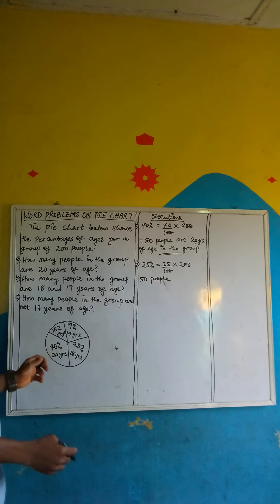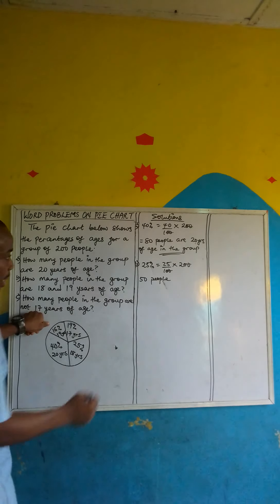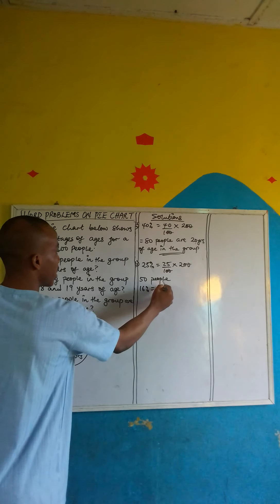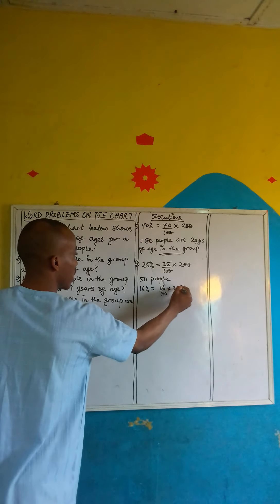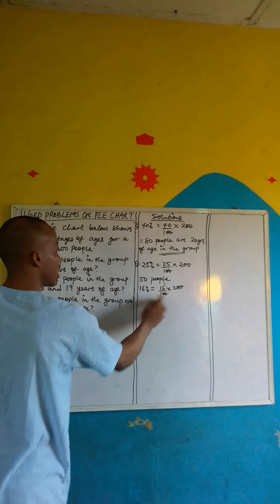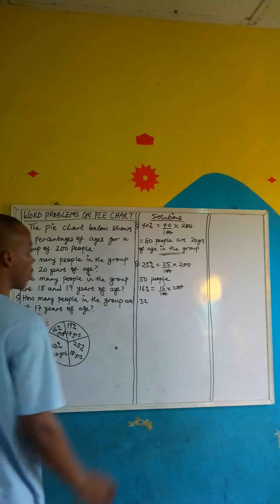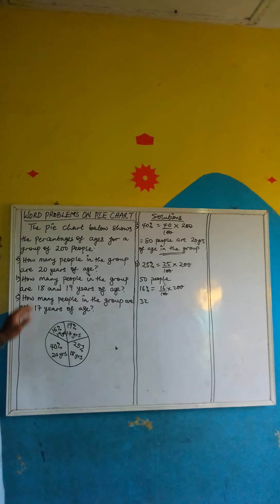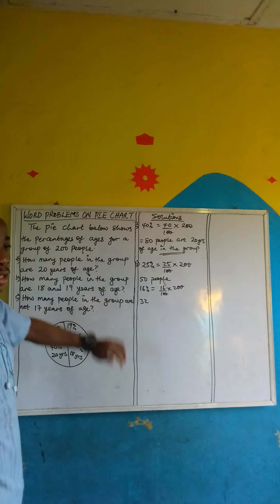Now for 19 years of age — look at it here — that's 16%. So 16 over 100 multiplied by 200: the 2-0 cancels 2-0, and 16 times 2 gives us 32. But we are not done yet, because the question asks how many people in the group are 18 and 19 years of age.